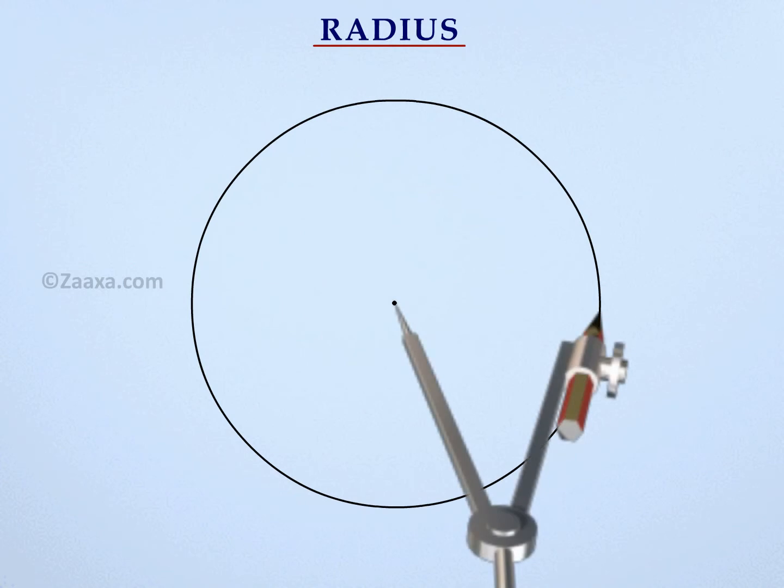The distance between the pencil and the sharp metallic tip is the radius of the circle. The radius of the circle we just drew is thus 5 cm.